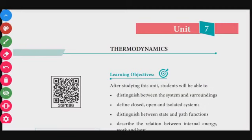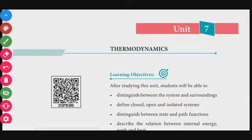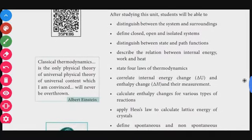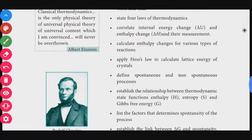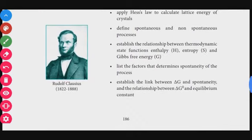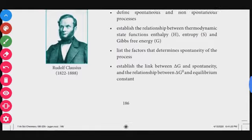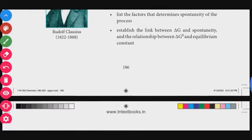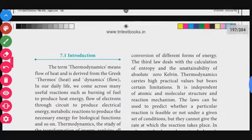In this chapter, we will distinguish between system and surroundings. We'll cover closed system, open system, isolated system, and state and path functions. Then the relation between internal energy, work, and heat for the law of thermodynamics. Internal energy change and enthalpy change, enthalpy changes for various reactions, Hess's law, spontaneous and non-spontaneous processes. Relationship between enthalpy and entropy gives free energy, factors that determine spontaneity, link between delta G and spontaneity, and relationship between delta G-naught and equilibrium constant.